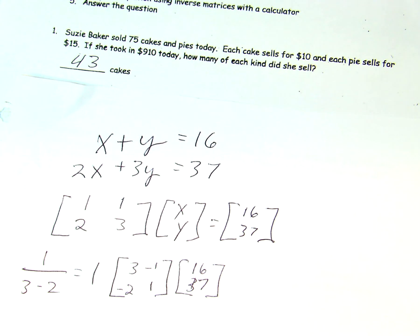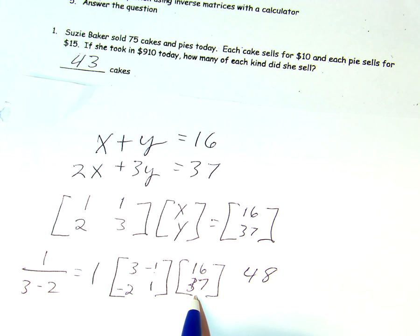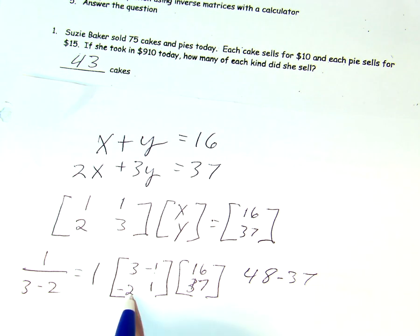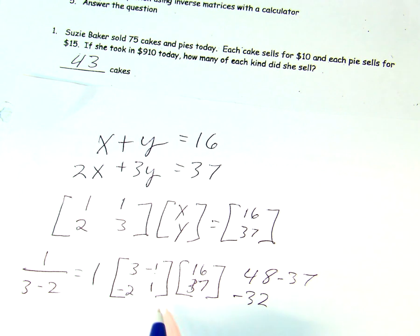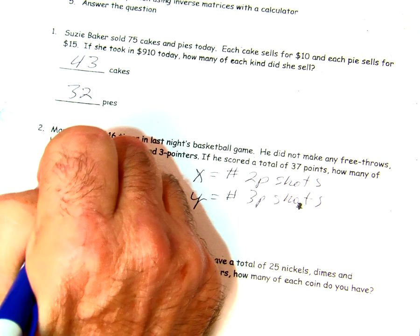So here we go. 3 times 16 equals 48. Negative 1 times 37 is, of course, minus 37. Negative 2 times 16 is negative 32. And then we have 1 times 37, which is plus 37. We do the math. We get here 11. Here we get 5. We have no fraction to multiply by, so we have our answer. 11 is the number of 2-pointers. 5 is the number of 3-pointers. They add up to be 16. When we plug these into our equation, we come out with 37. So, we do have 11 and 5.